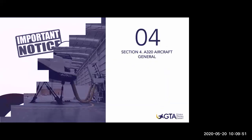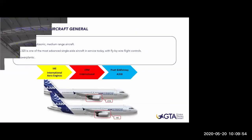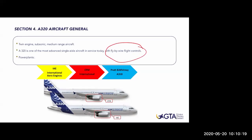Let's get into the aircraft general. We all know what an Airbus 320 is - we've seen it many times at airports and traveled in them. It's a twin-engine subsonic medium-range aircraft, and the A320 is one of the most advanced single-aisle aircraft in service today, with fly-by-wire flight controls. This fly-by-wire is what makes the aircraft so special, because pilot-wise it has nothing to do with any conventional aircraft from flight school or other companies.